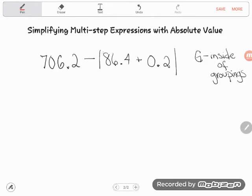So you can see that these absolute value bars have naturally formed a grouping within the parentheses. Because that little part of the expression has been grouped, we should start there. So first thing I should do is 86.4 plus 0.2, or 86 and 4 tenths plus 2 tenths.